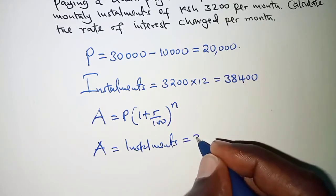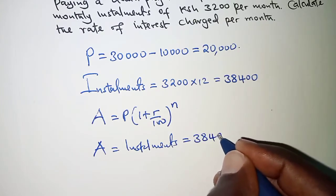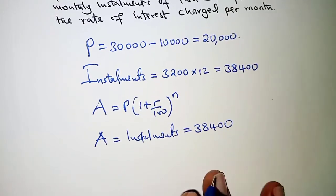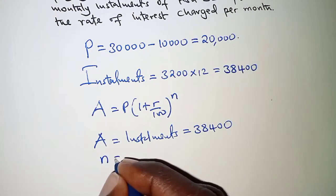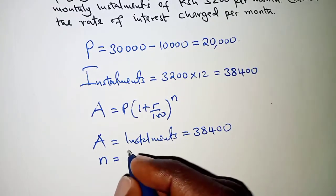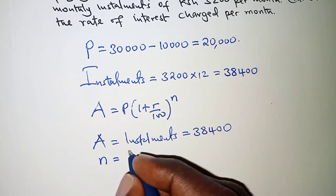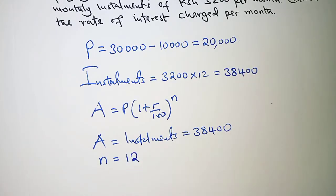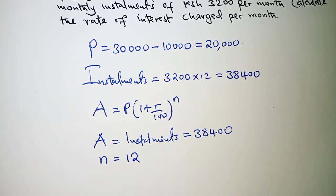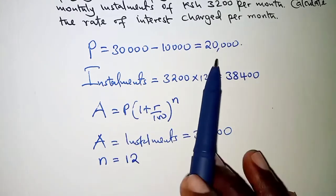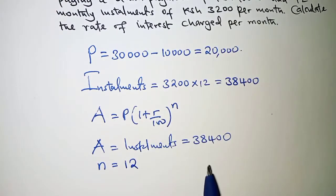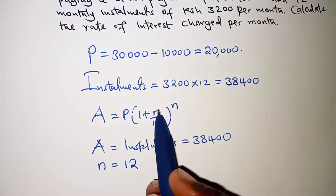Which for this case is 38,400. Then n is the period. So we are told that happens in a period of 12 months, so we have 12. And the principal we had already worked out earlier on. So what is remaining for us to determine is the value of r.